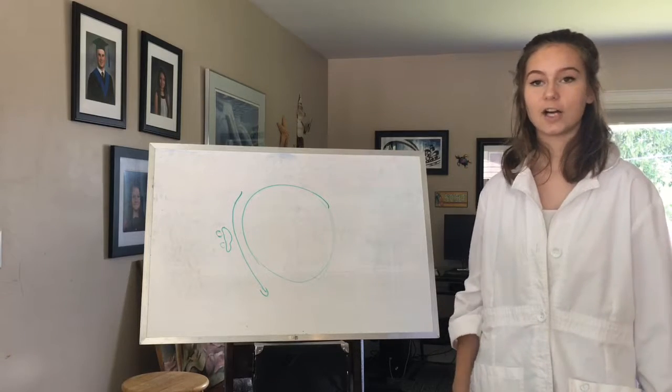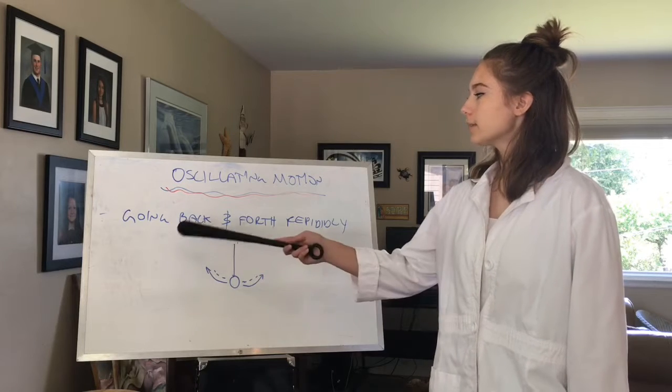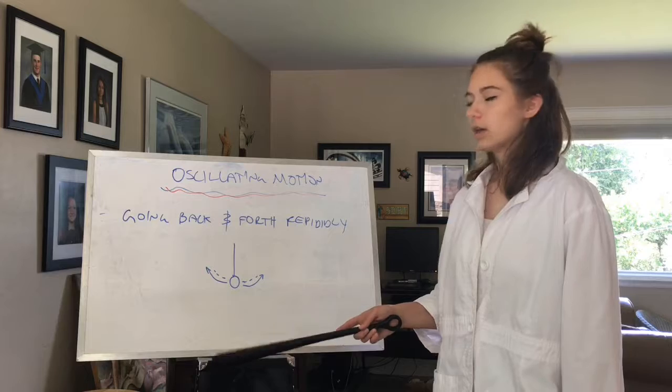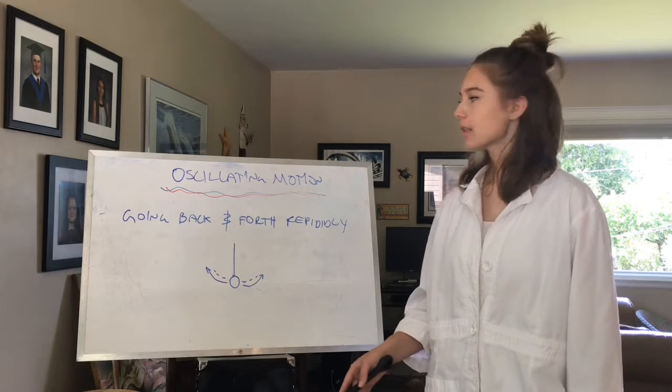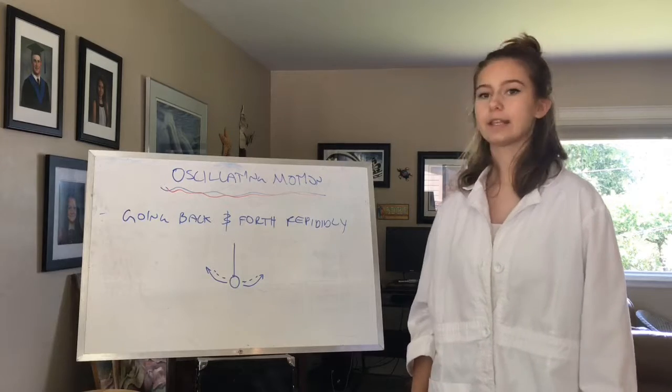Next, we're going to take a look at oscillating motion. Oscillating motion is a motion of going back and forth repeatedly. Now take a look at this next graph. It's a little bit different than the ones we've previously looked at. This one displays oscillating motion.